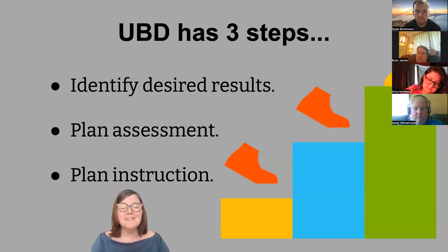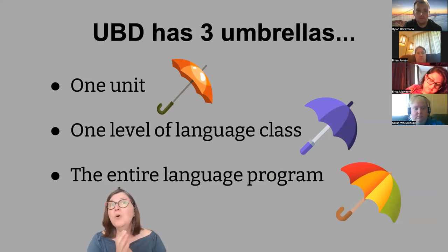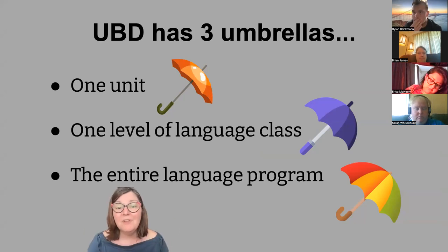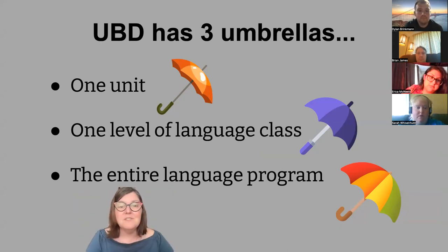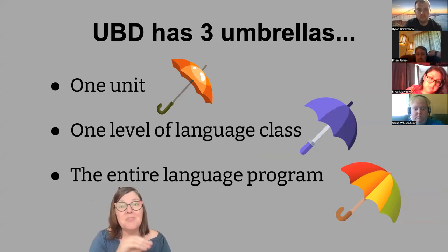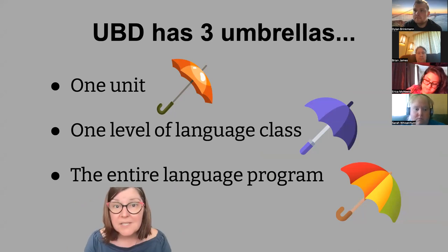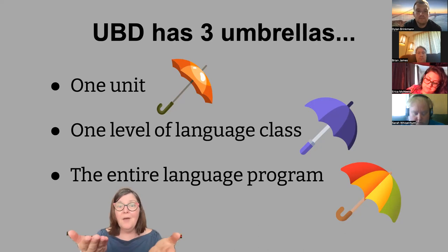Understanding by Design has three different umbrellas: you can plan backward from one unit, from one whole level of a language class, or from your entire language program. For example, you could plan backward from Spanish One — what's your end result? What do you want students to be able to do when they finish? Then determine what units during level one would help them achieve that.